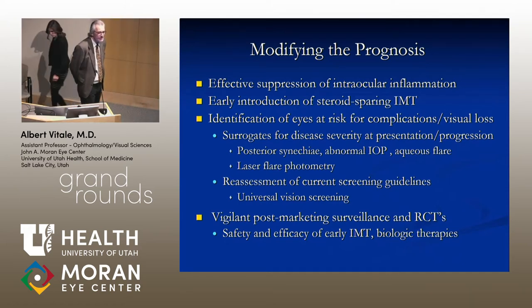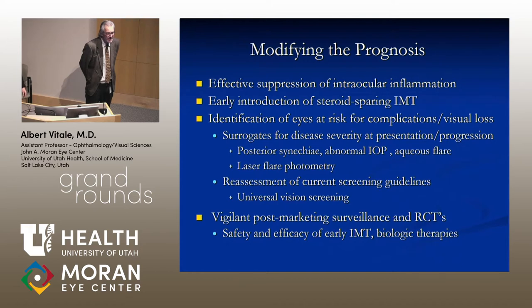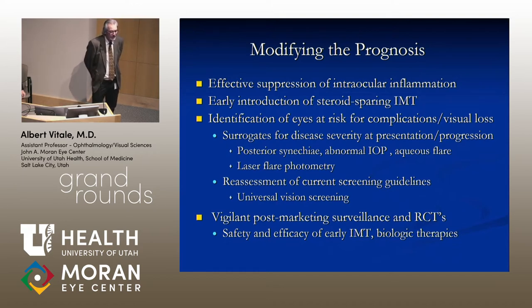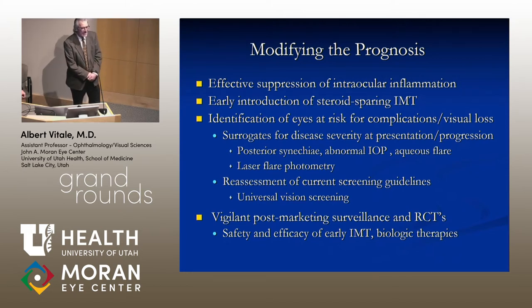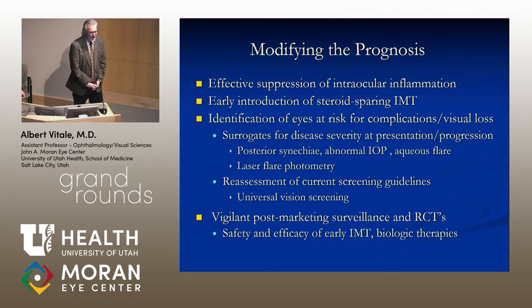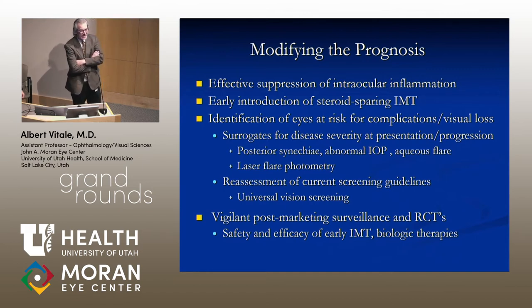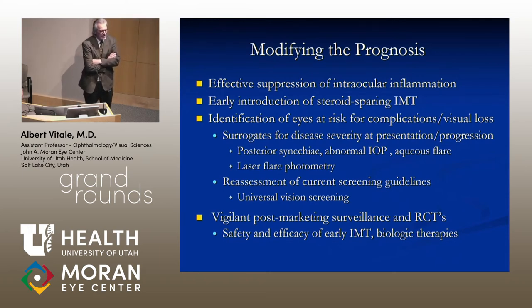Question from colleague: With the move to these immunomodulatory agents, are the safety profiles such that you feel comfortable utilizing them without co-managing with rheumatology? Response: For children, we co-manage with rheumatology. In adults, we manage immunomodulatory therapy including biologic agents by ourselves here. One of the reasons we co-manage children is that a large number of these patients have systemic disease, so it makes a lot of sense. We have a really hand-in-glove collaboration with pediatric rheumatology.